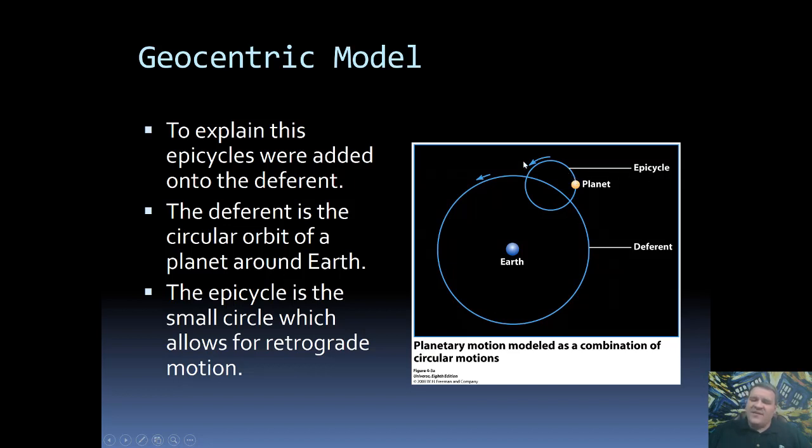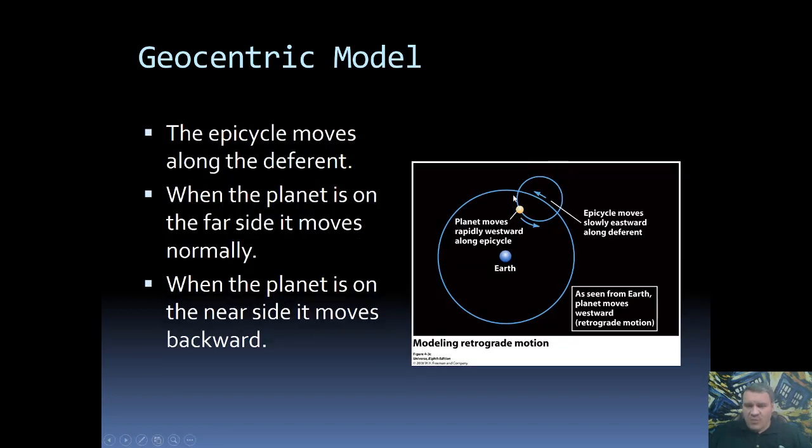So when the planet is on the far side of its epicycle, it would move the way that we would expect. It would travel eastward from night to night. But when the planet swung inside of the epicycle, then it would travel backwards for a time. And this way we could explain the forward and then backward and then forward motion that we tend to see with planets. And so the Earth is the center of everything, and we can explain retrograde motion. Now, for a time, this was totally good.